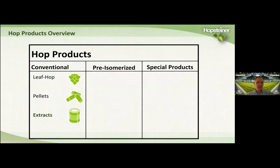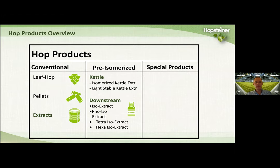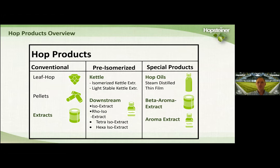When it comes to hop products, we have our conventional hop products — leaf hops, hop pellets, and CO2 hop extract. We also have pre-isomerized products, separated into those isomerized and added to the kettle, and those added post-fermentation. And then the specialty hop products are our oil products: the steam distilled thin film, as well as our beta aroma extract and aroma extract.